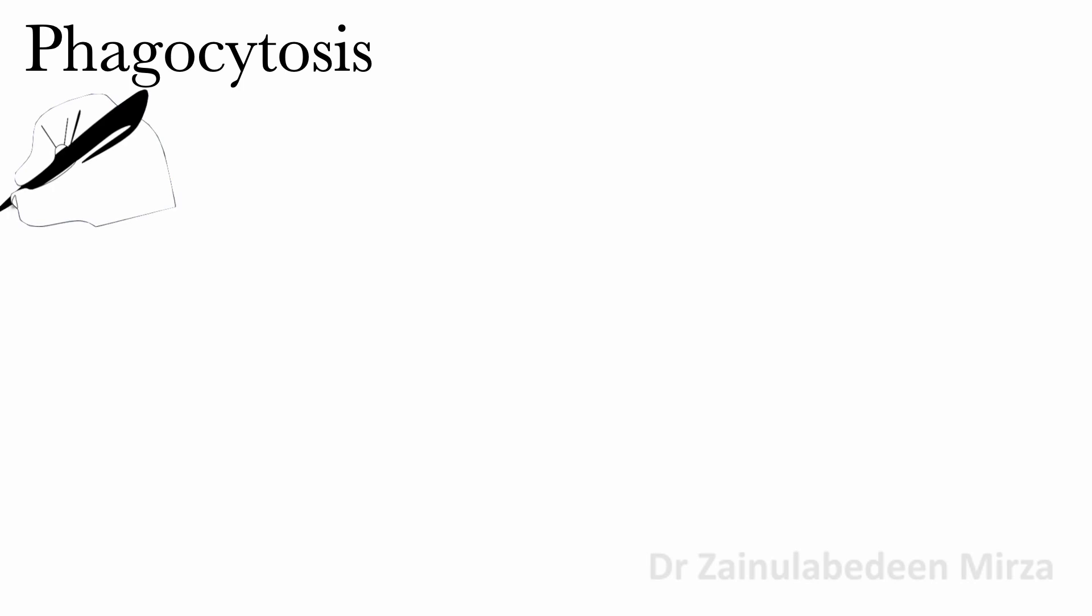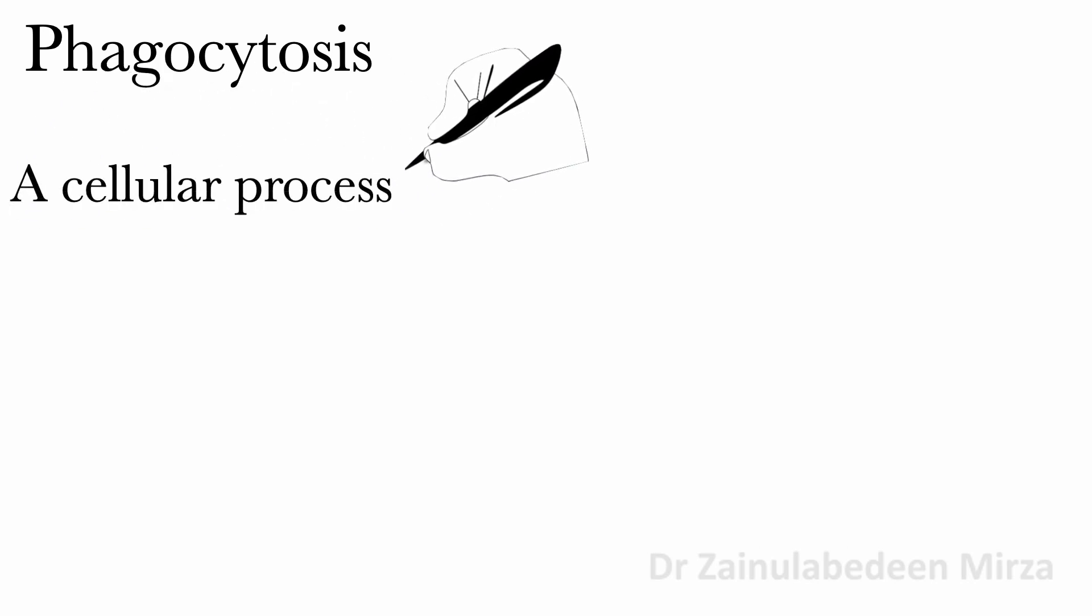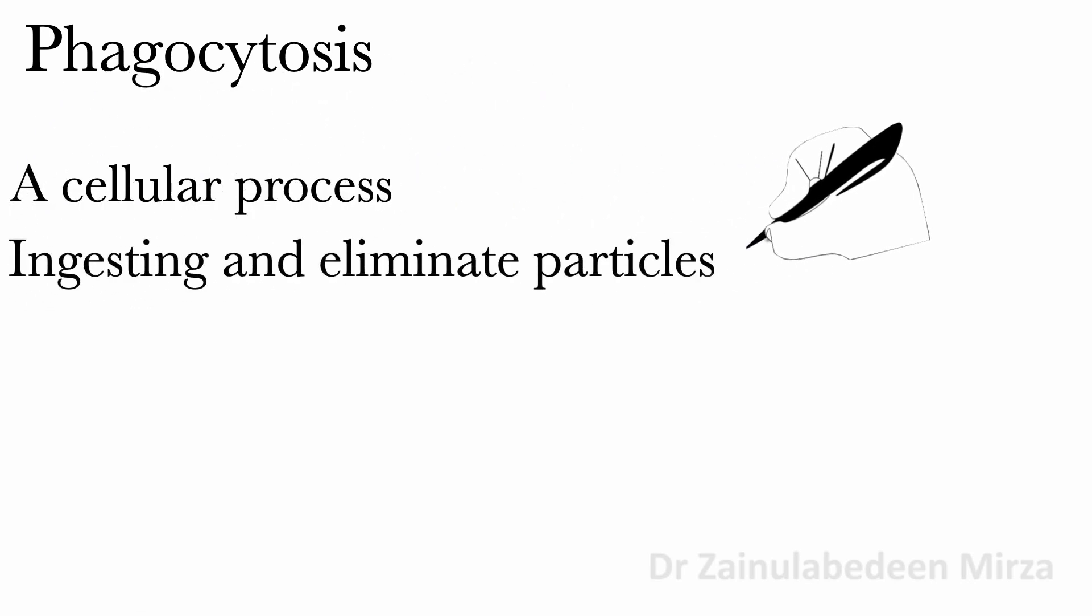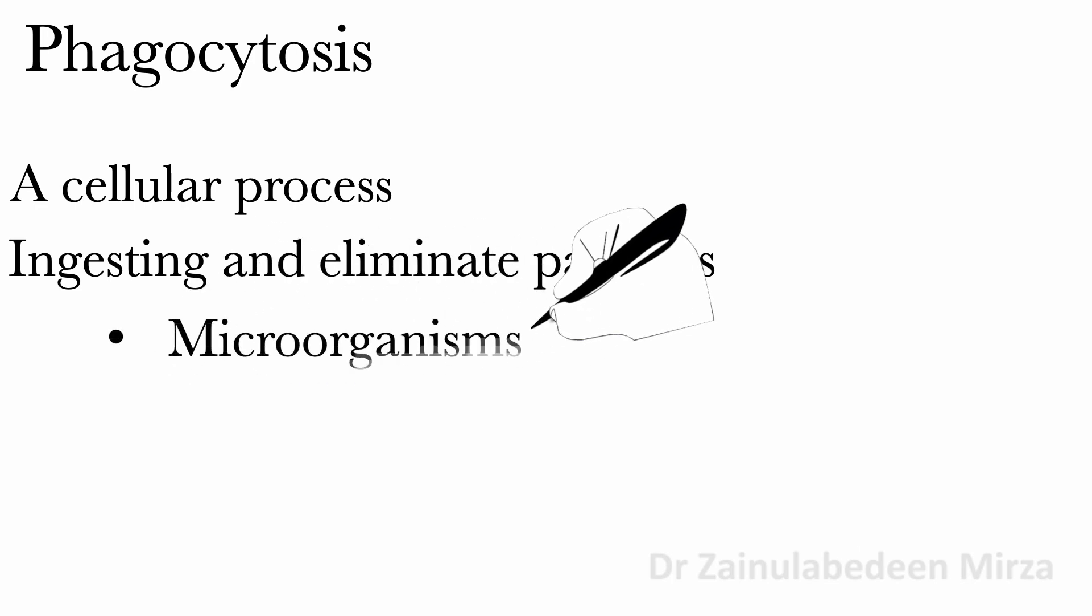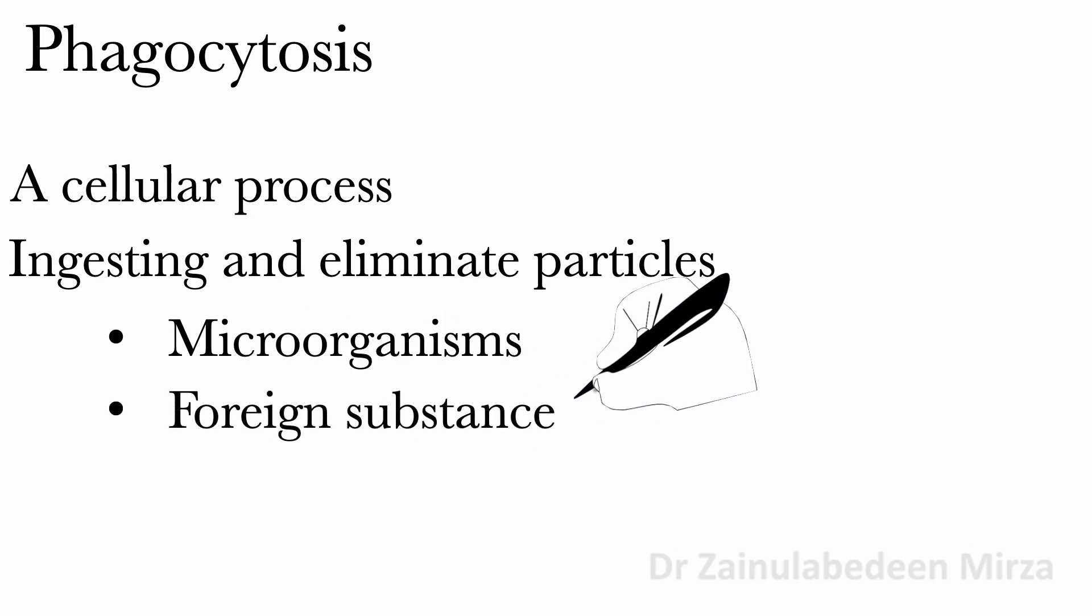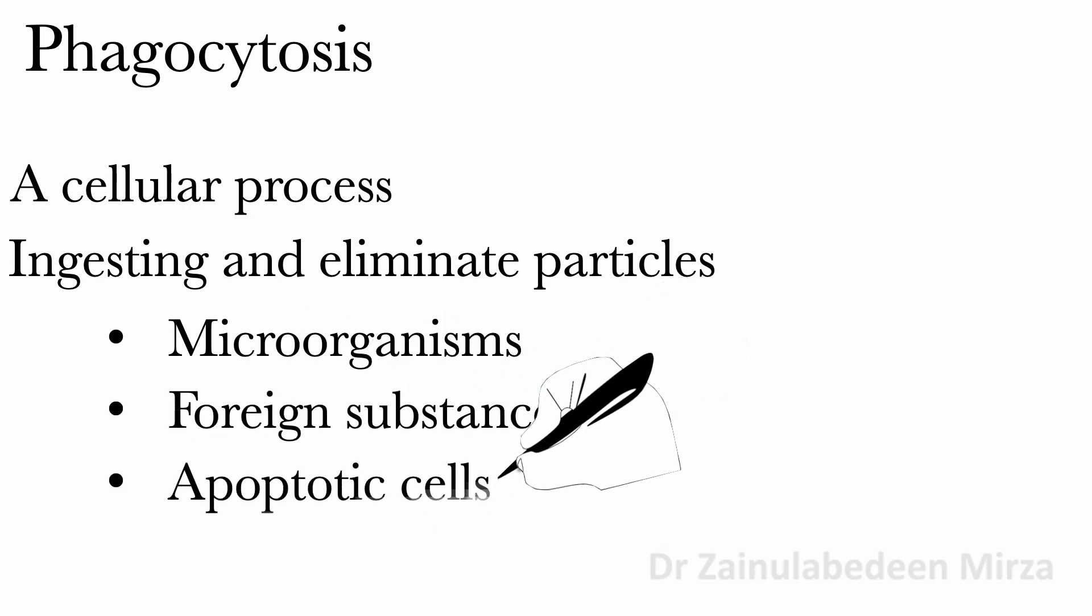Phagocytosis is known as a cellular process for ingesting and eliminating particles larger than 0.5 micrometers in diameter, including microorganisms, foreign substances, and apoptotic cells.